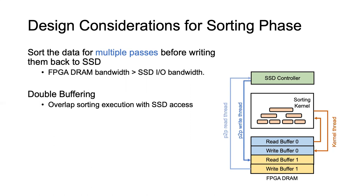For example, from the host side we will see three threads in the figure. One kernel thread is sorting the data with a set of read buffer zero and write buffer zero. At the same time, the P2P read and write threads do the work of SSD access with read and write buffer one. So for the next chunk of data, the kernel will work with read and write buffer one while the P2P read and write works with read and write buffer zero.